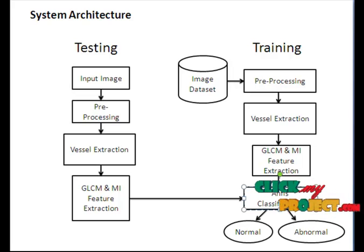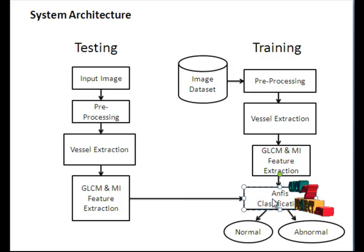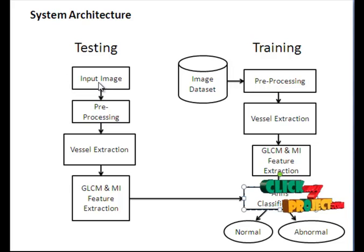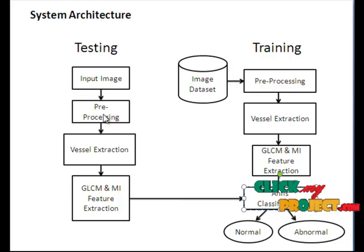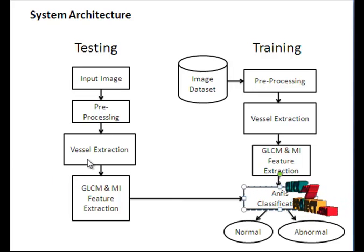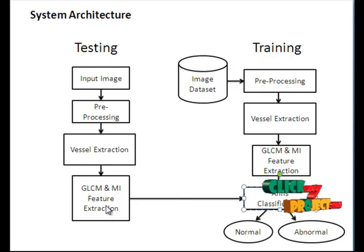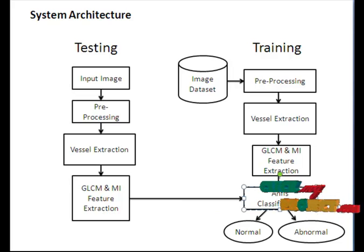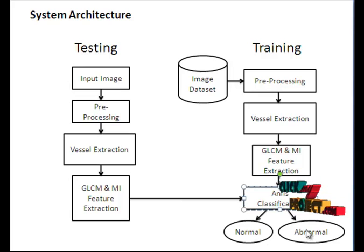In the testing stage, we provide a retinal image which goes to the pre-processing stage. Here, red, green, and blue channels are separated. The green channel goes to vessel extraction, and the extracted vessel goes to feature extraction. The feature values are then passed to the classifier, which predicts the result as normal or abnormal.